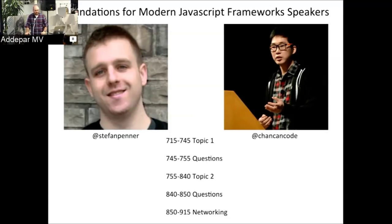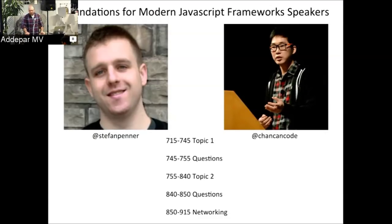The theme today is foundations for modern JavaScript frameworks, and our two speakers will look at two different aspects: build tools and a view layer rendering engine. Steph Penner works at Yahoo and is one of Yahoo's TC39 reps — a recent development, congratulations. He spends all day making sure your Ember or Angular 2 builds run fast — both use Broccoli in their tool chain. Godfrey Chan works at Tilde and will go into HTMLBars, Ember's new reactive rendering layer.